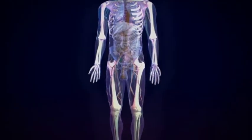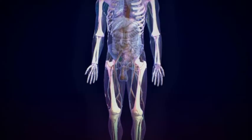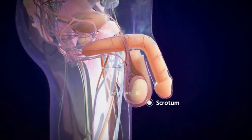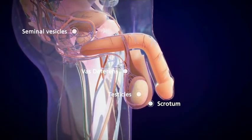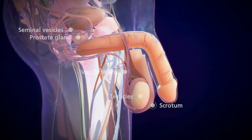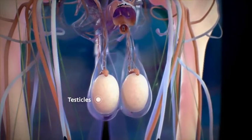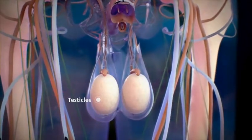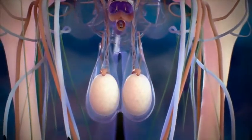The penis and urethra form part of a man's urinary and reproductive system. The scrotum, testicles, vas deferens, seminal vesicles, and prostate gland comprise the rest of the male reproductive system. The testes produce sperm for reproduction and testosterone, the primary male sex hormone.